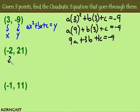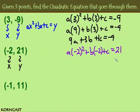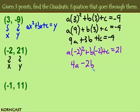For the second point, x is -2 and y is 21. Substituting into our standard form equation: a times (-2)² plus b times (-2) plus c equals 21. Since (-2)² is positive 4, this simplifies to 4a - 2b + 1c = 21.